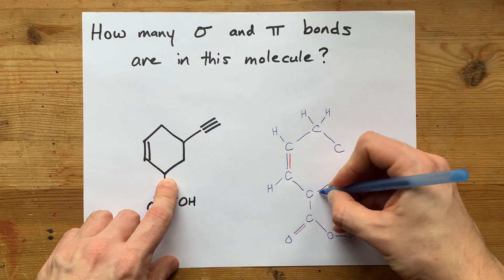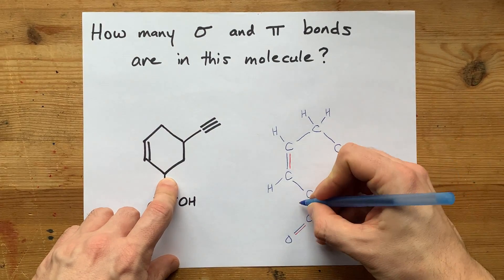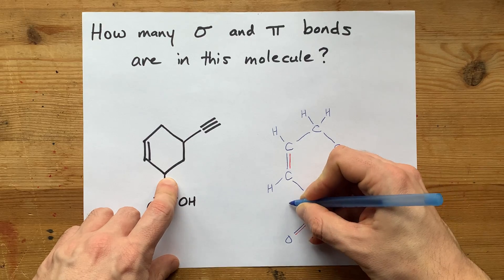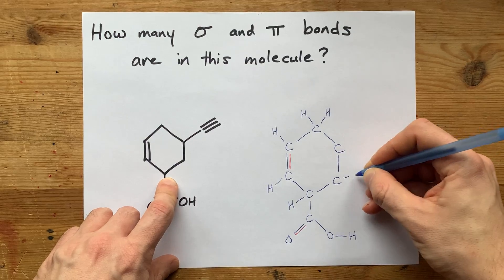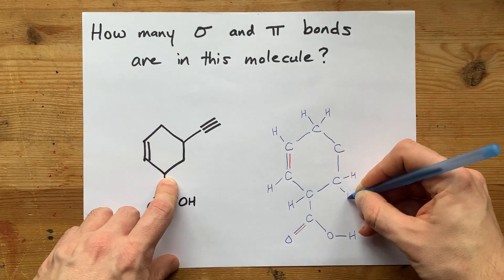Now that carbon has one, two, three things bonded to it, so I need a fourth. There's the hydrogen that was not shown. That carbon was single bonded to that carbon. It had two hydrogens that weren't shown.